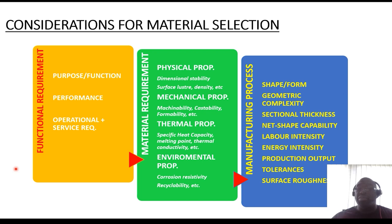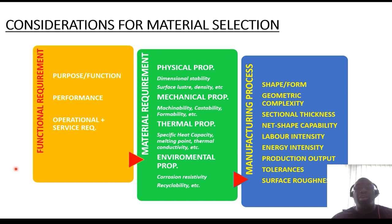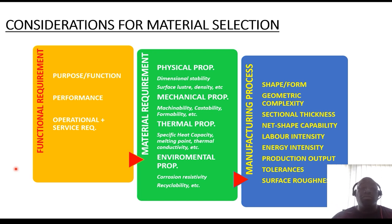Once you have an understanding of the functional requirements of the product, you can then look at the material requirements and how they complement the functional requirements. Physical properties like dimensional stability are quite important — if the dimension of a part is critical to how it needs to function, you may want to look at a material that can retain its dimensions over time. Density relates to how heavy or light a material is, and becomes a very important factor when selecting material to reduce weight or safeguard the work output of the device.